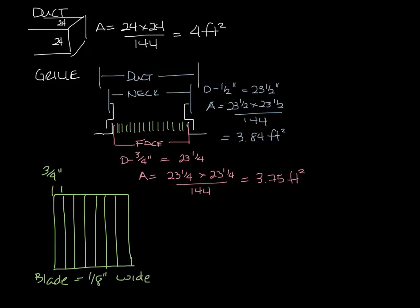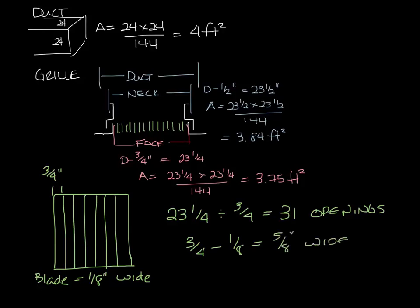So 23 and a quarter, which is our face dimension, divided by three quarters is 31. So there's 31 openings in our grill here. Each blade will take up some of that. So three quarter minus two half blades, which totals one full blade or one eighth, is five eighths inch wide, and they're 23 and a quarter inches long.